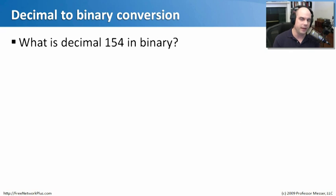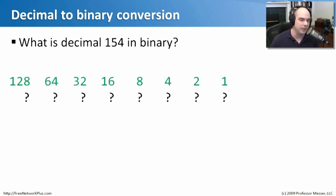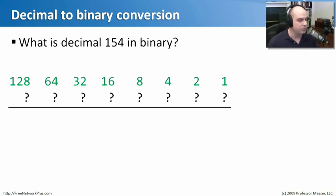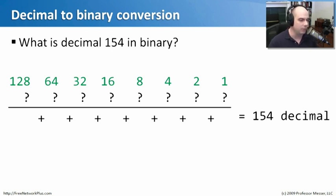Now let's reverse it and work from the other direction. What is decimal 154 converted into binary? It's almost the same process but working backwards. We'll put down blank spaces for the ones and zeros since we don't know them yet, and we'll still use our binary-to-decimal conversion chart. Underneath the chart, we need to fill in ones and zeros so that everything adds up to 154.